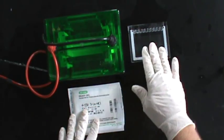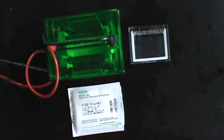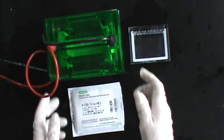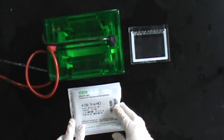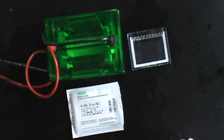SDS polyacrylamide gel electrophoresis is a powerful technique that we can use to separate mixtures of proteins and determine the sizes of some of the proteins in that mixture.